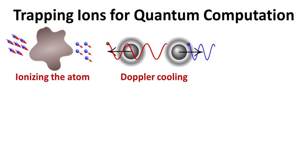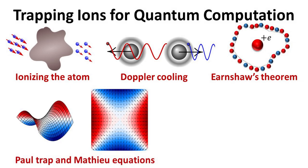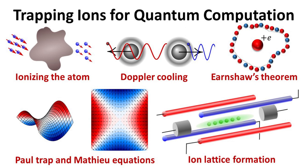In this video, we discuss the basic physics of ionizing the atom and Doppler cooling. We discuss why you cannot trap an ion with an electrostatic field, a result called Earnshaw's theorem. This then led us to the Paul trap, which allows for ions trapping using a time-varying electric field. The goal is to form a cooled ion lattice as shown, the platform for quantum computation.